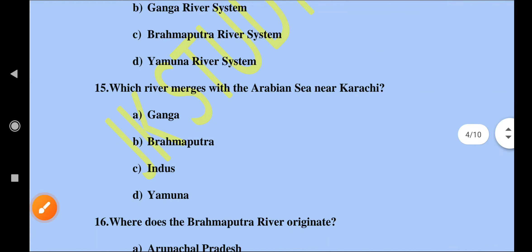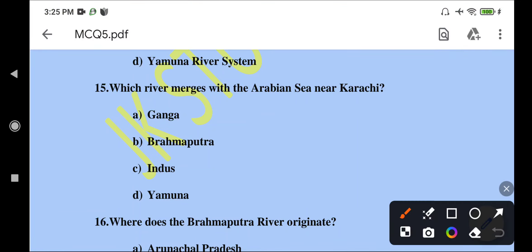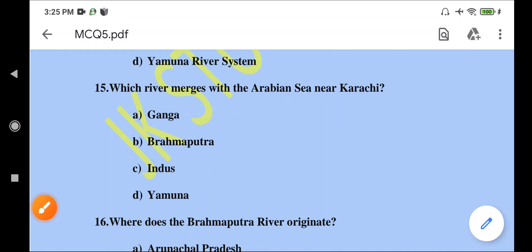Which river merges with the Arabian Sea near Karachi? The correct answer is the Indus River. The Indus River merges with the Arabian Sea near Karachi.